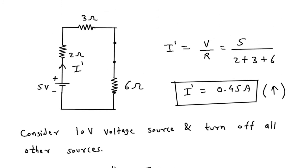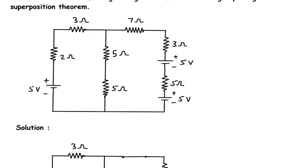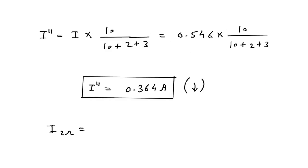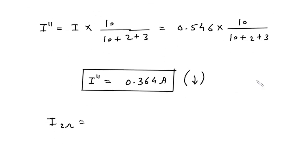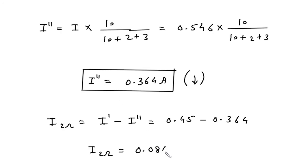The direction for I double prime is downward and the direction for I prime is upward, so the directions are opposite. Therefore, the current through the 2 ohm resistor is the higher current minus the lower. I prime is 0.45 ampere and I double prime is 0.364 ampere, so I prime is greater. Therefore I_2Ω is equal to 0.45 minus 0.364, which is 0.086 ampere.